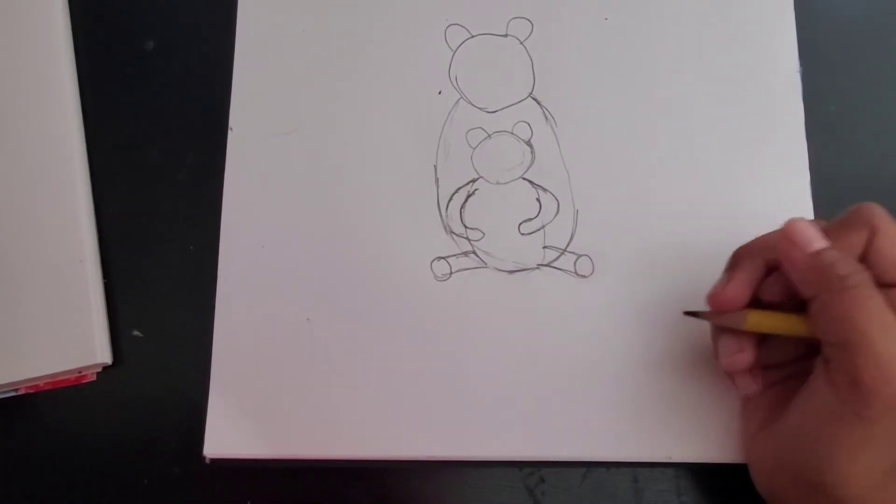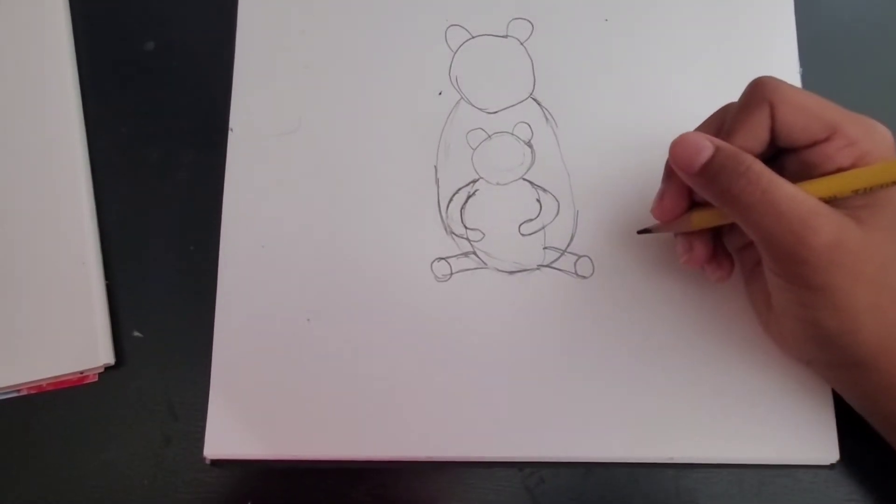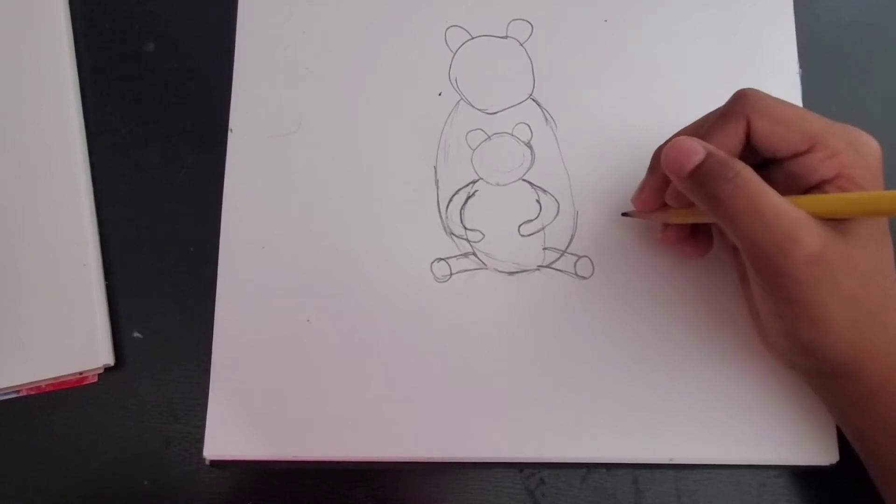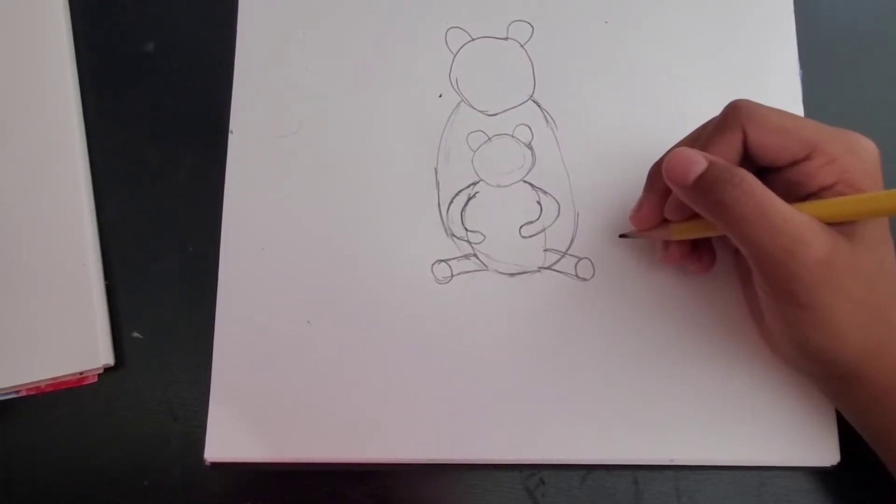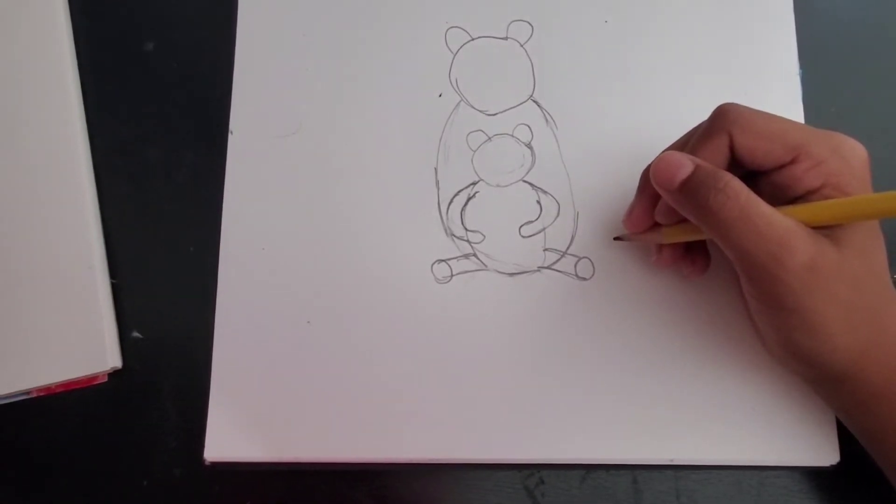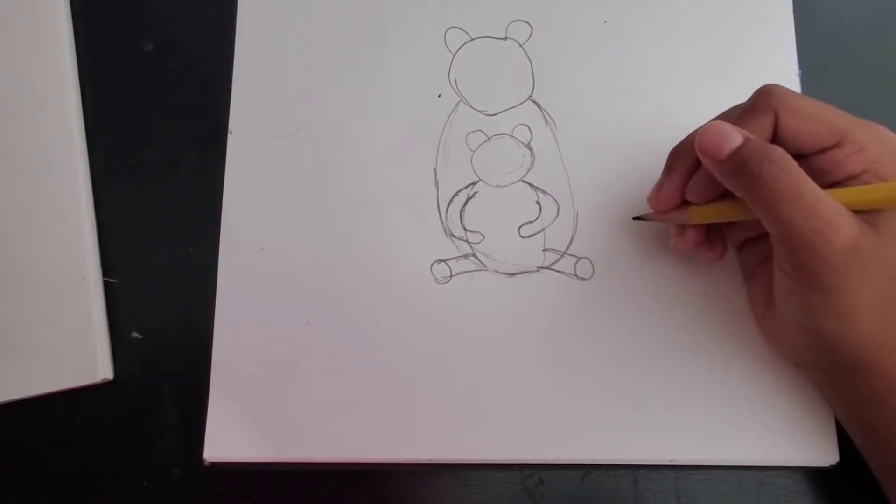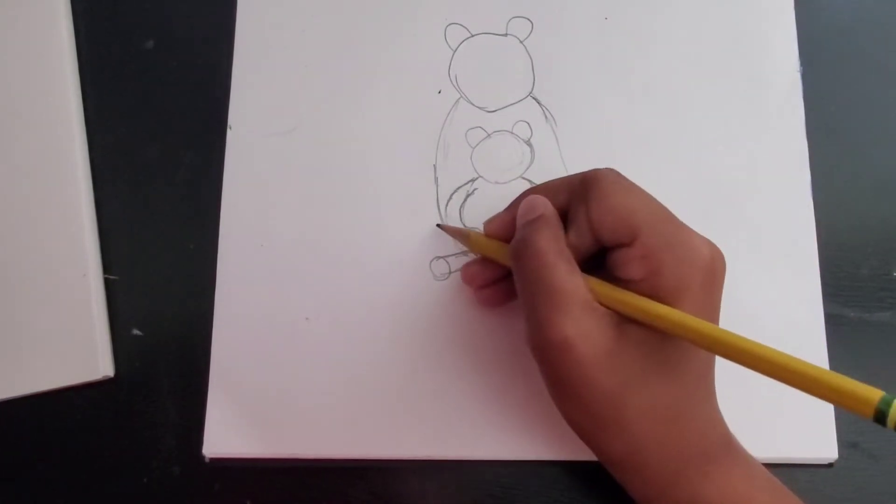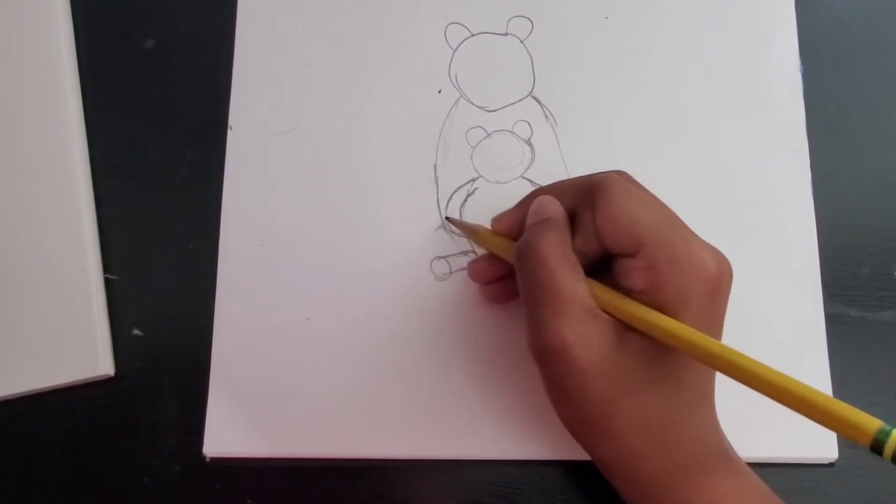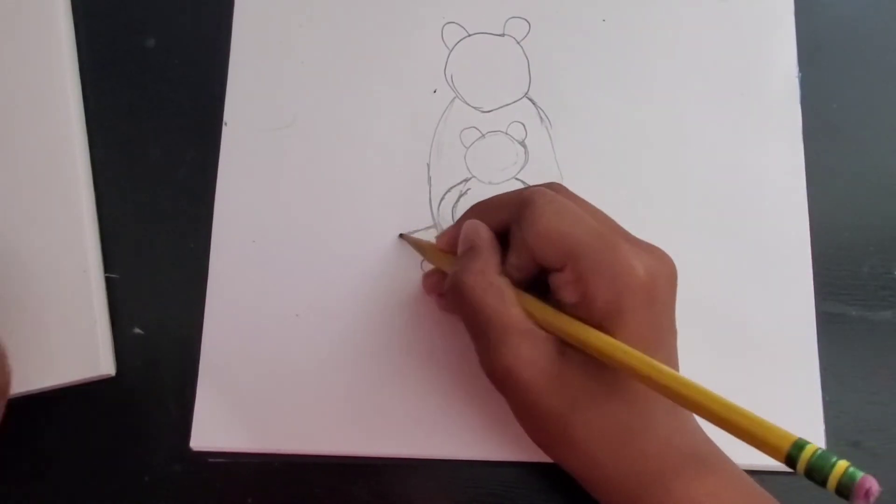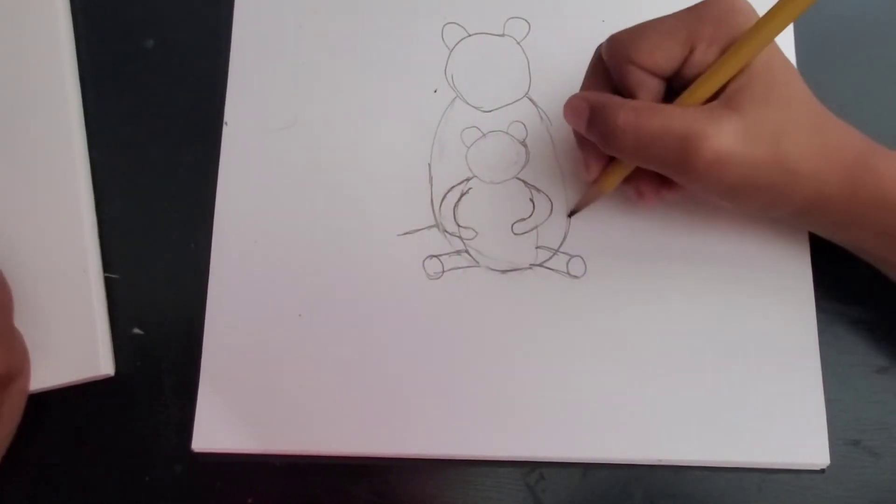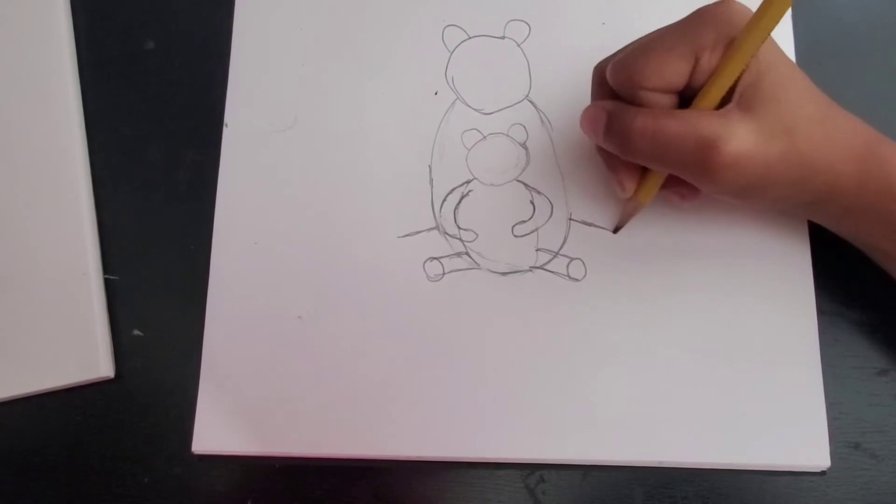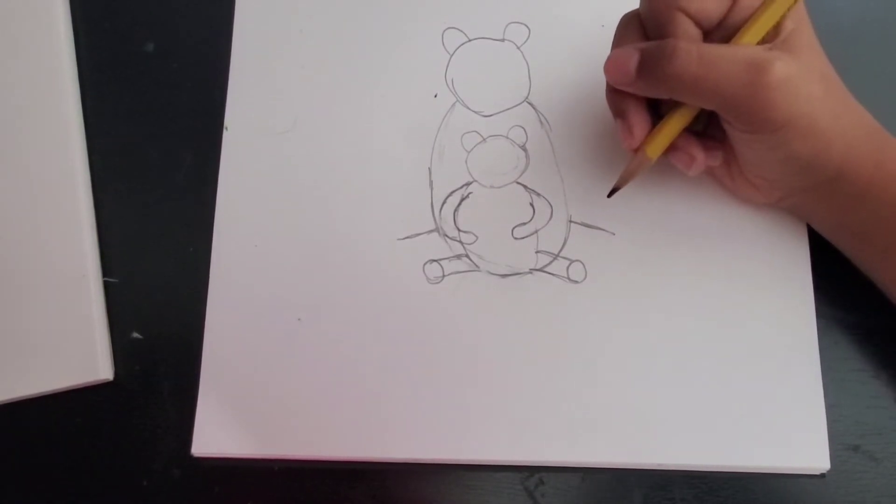So that's about it for the baby bear for now. Now next we have to make mama bear's feet too. So the mama bear's feet just goes on top. On the other side too. And then you make a round paw.